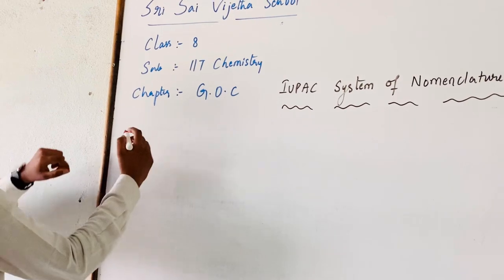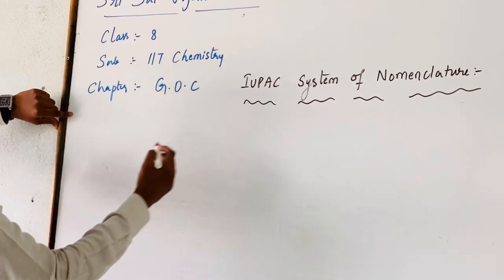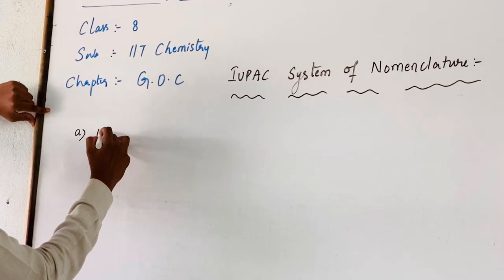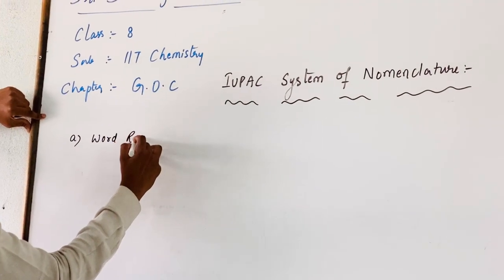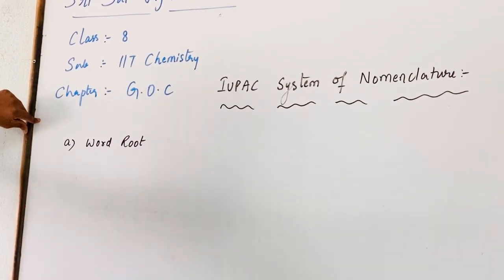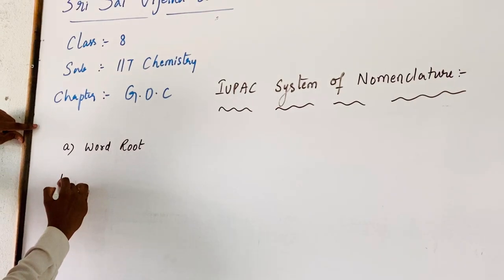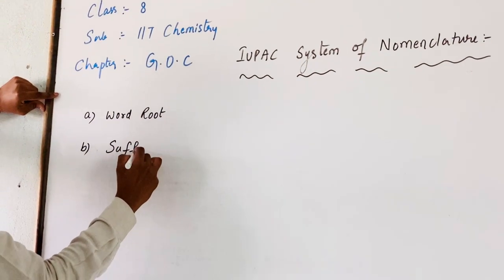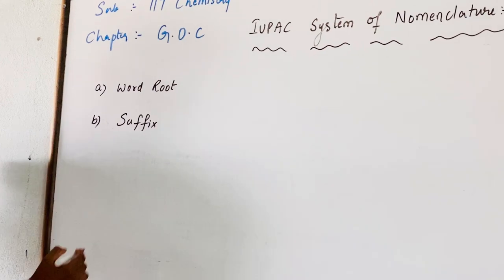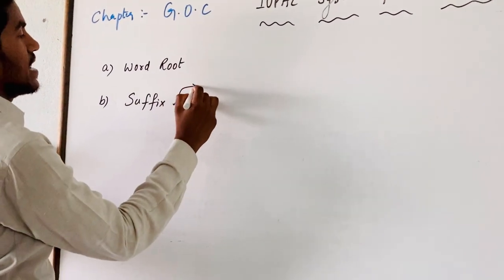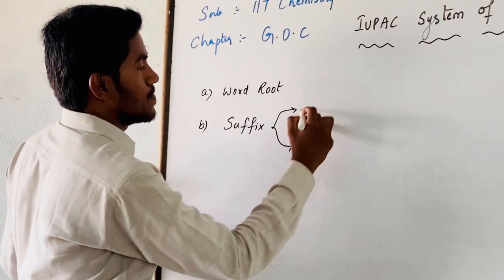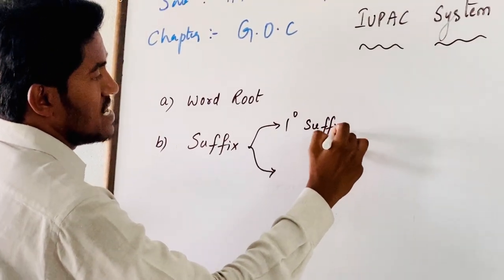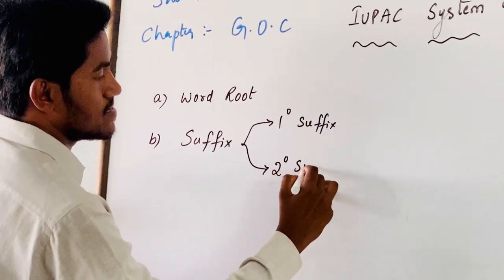Now coming to the roots of IUPAC Nomenclature. First one is Word Root, which can also be called as Root Word. Coming to the second one, that is Suffix. We already discussed it. Suffix is again divided into two types: primary suffix and secondary suffix.